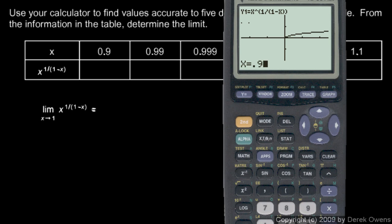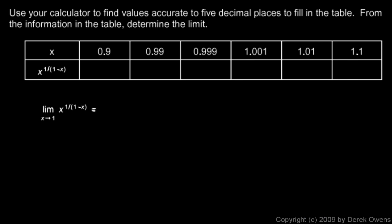So if we put in x equals 0.9 and hit enter, we get 0.34868. So let's write that, 0.34868. And I'll give you the other values here. At 0.99, it's 0.36603. And at 0.999, the function has a value of 0.36770.